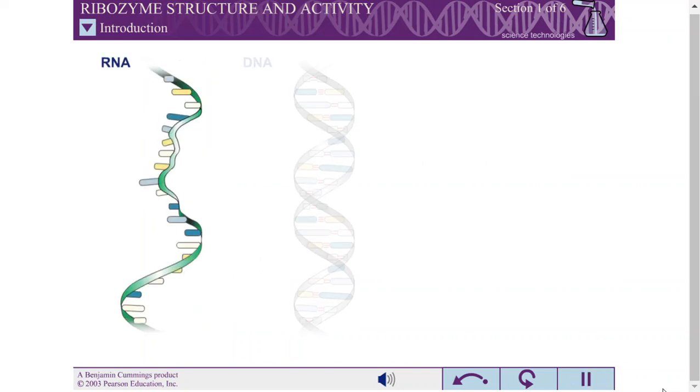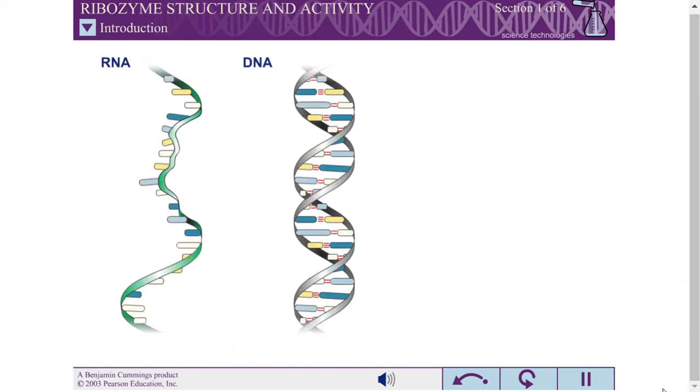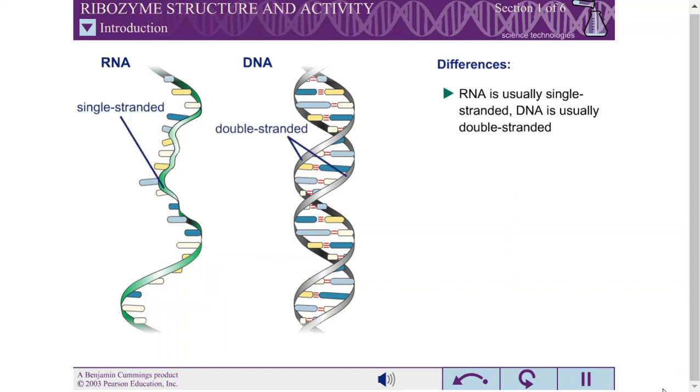While the structures of RNA and DNA are similar, RNA differs from DNA in three key respects. First, RNA is usually found as a single polynucleotide chain rather than a double strand. This allows RNA to fold back on itself, forming complex tertiary structures.